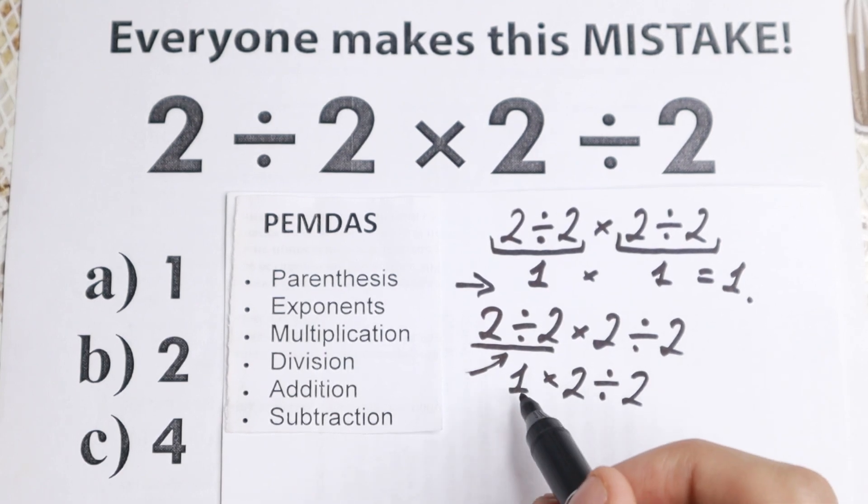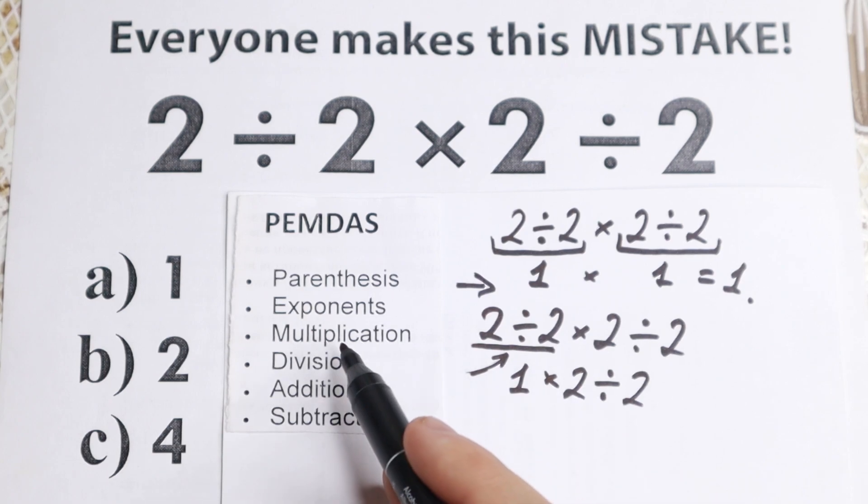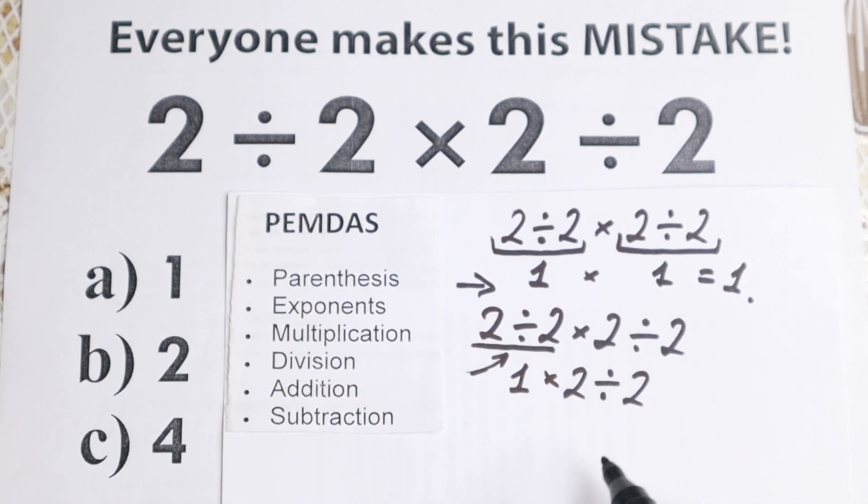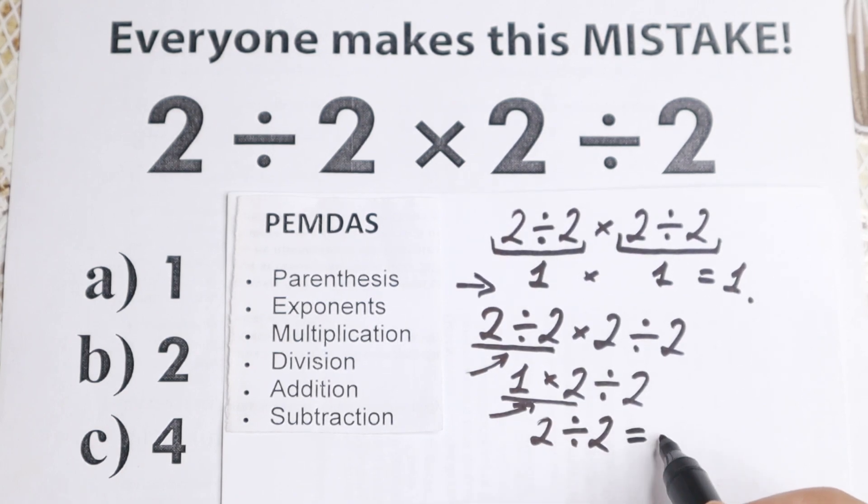And right now we have this expression. Let's scan what is this step. So multiplication, division part, once more. So let's scan what is the first sign from left to right. The first sign is this multiplication. So let's multiply. 1 times 2 equal to 2. And we will have division by 2. 2 divided by 2 equal to 1.